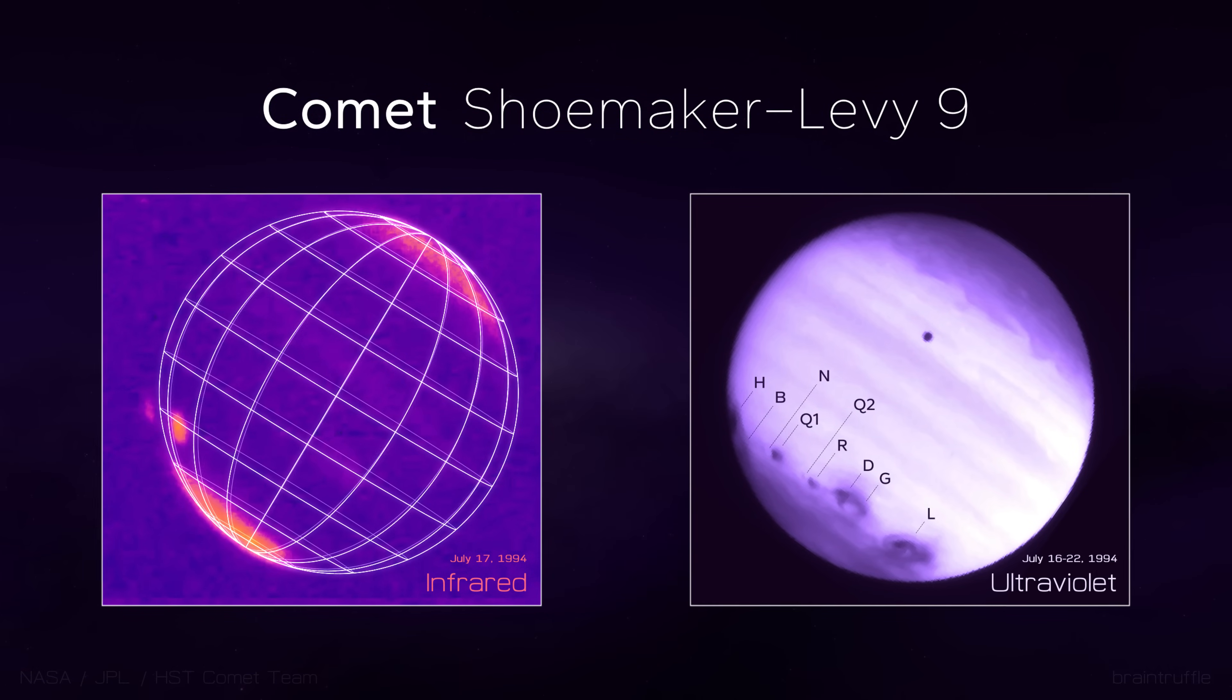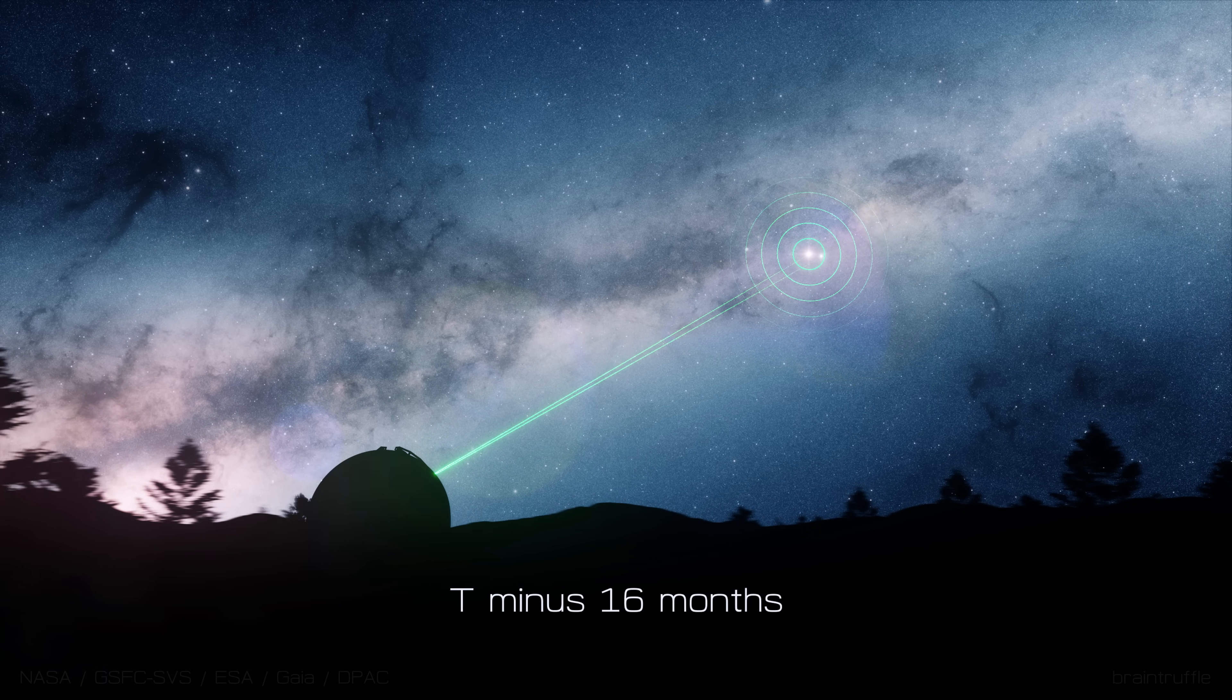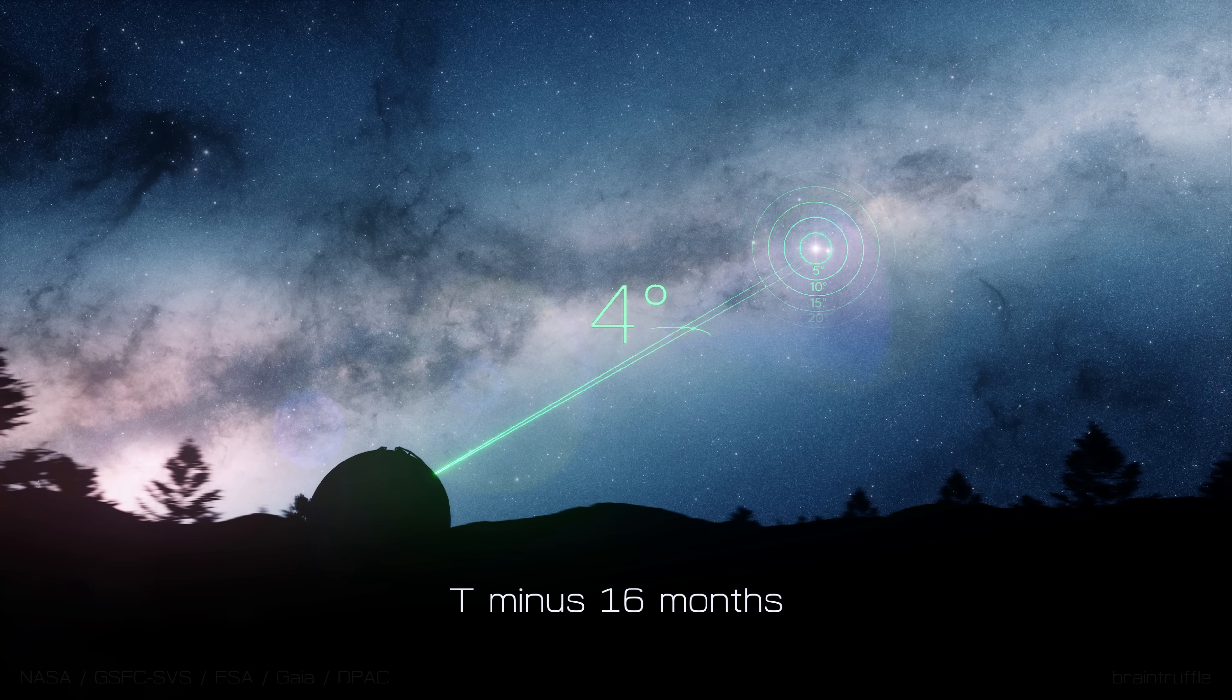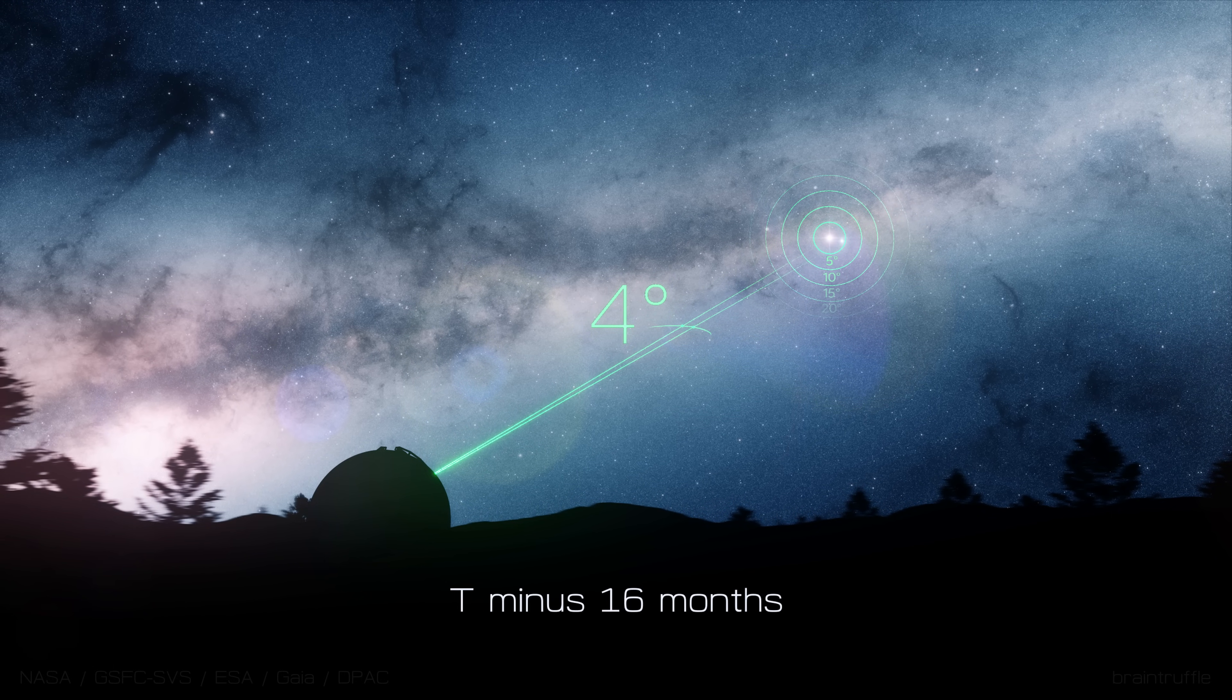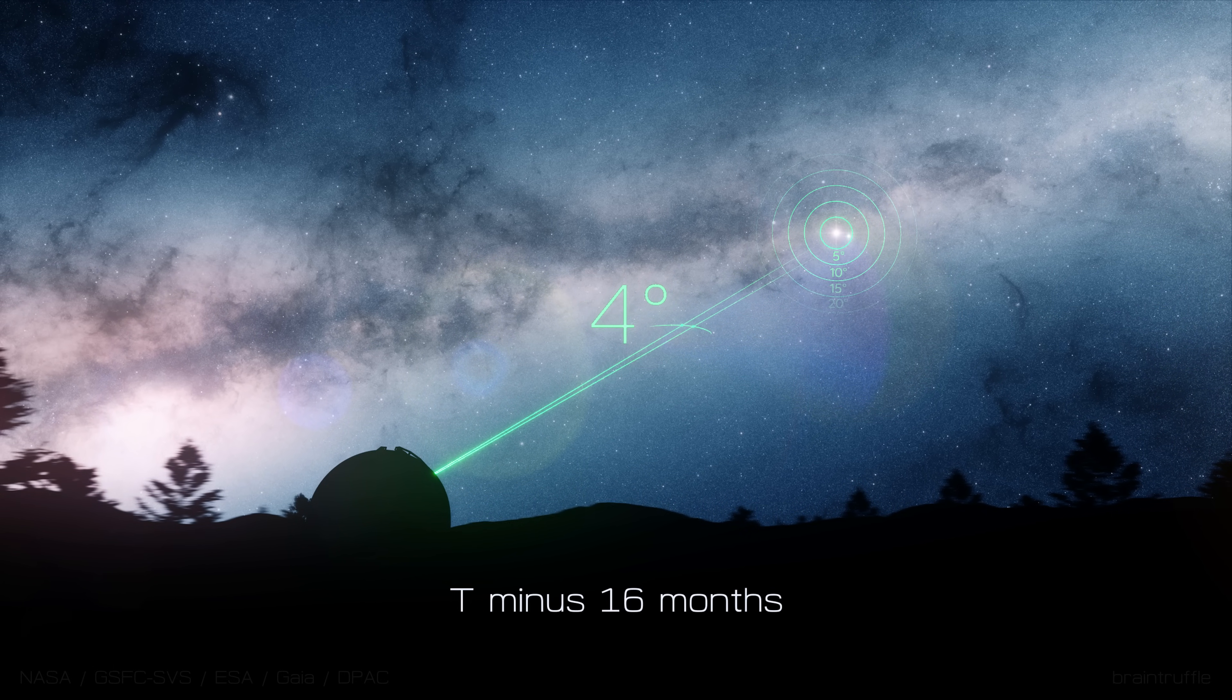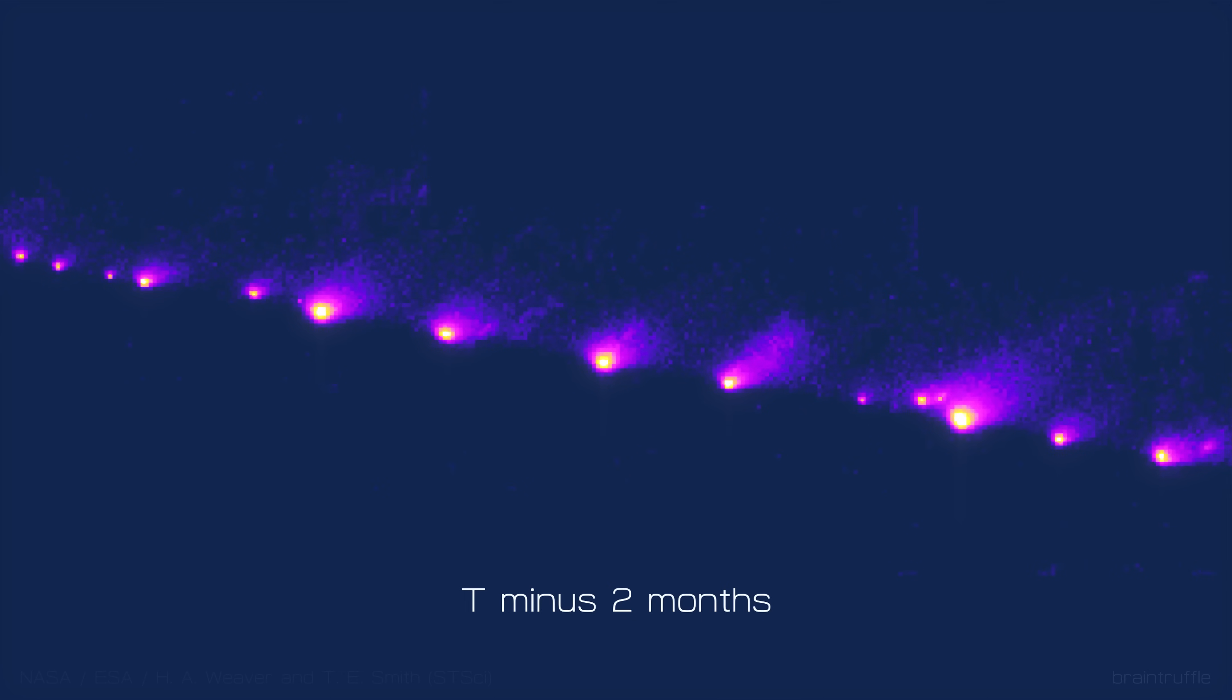16 months before impact, astronomers confirmed an object about 4 degrees from Jupiter at roughly the same distance from Earth. And what first appeared as a single object turned out to be 21 major fragments moving like a string of pearls.